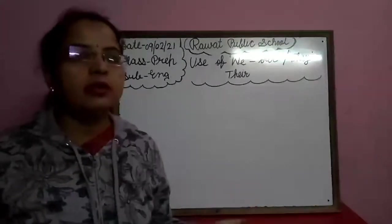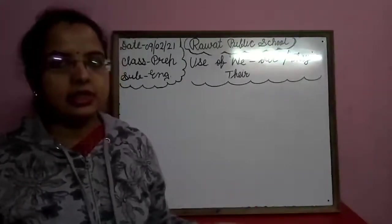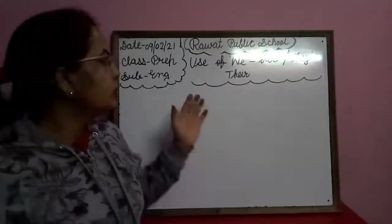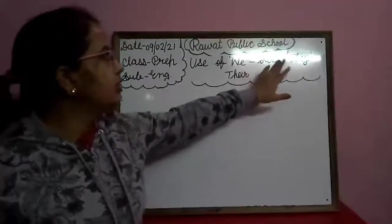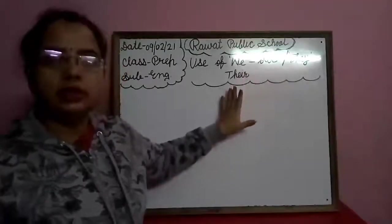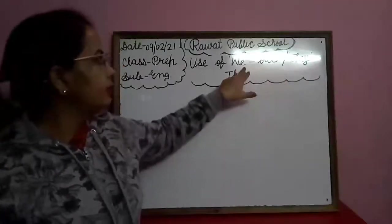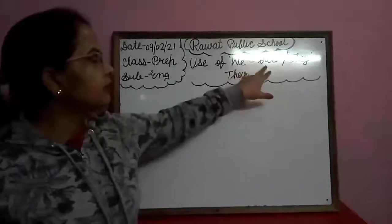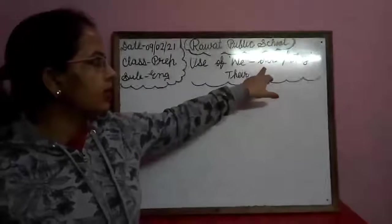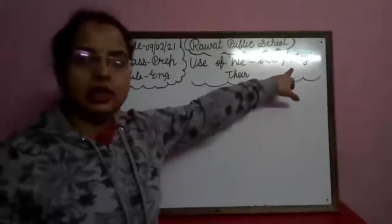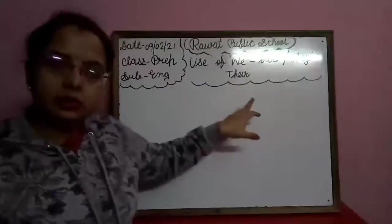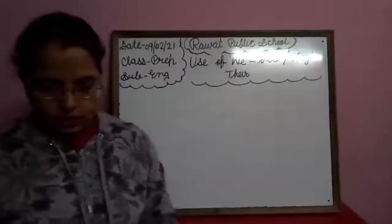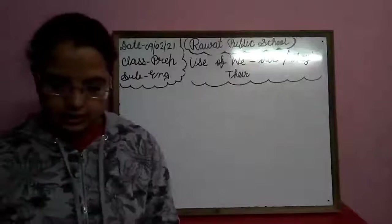So, today we learned the use of We, Our, They, Their. We matlab hum. Our matlab hamara. They matlab voh. Their matlab unka. So let's start.